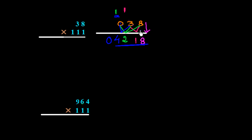The same pattern we have to follow: first write the unit place digit, then the sum of two numbers, then the sum of three numbers, then the sum of two numbers again, then the first digit.